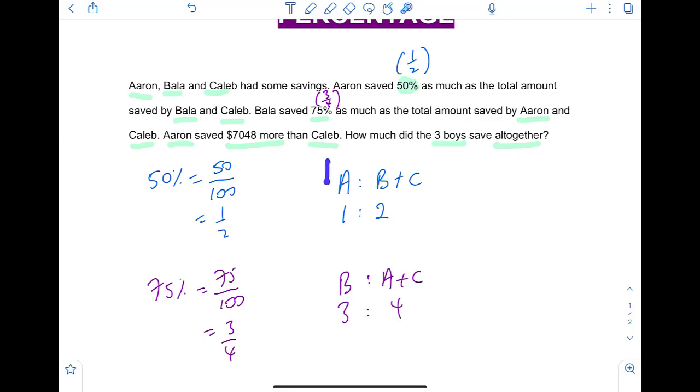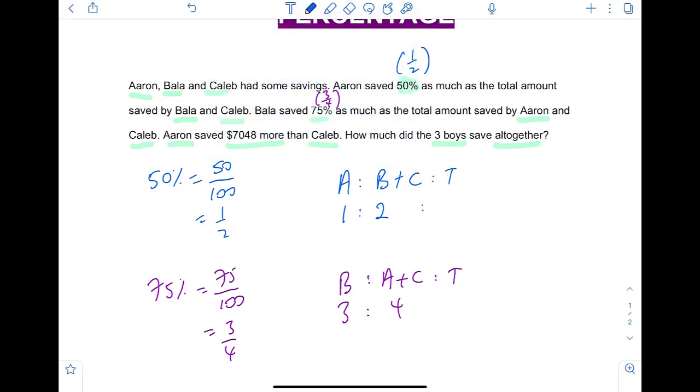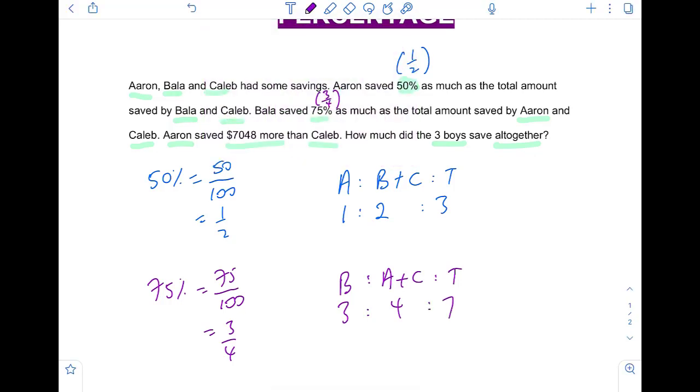And in both ratios, I want you to understand this, that the total amount saved by all these 3 people must remain the same. So, if I develop a total ratio as well, total for the top will be 3 here. And for the next ratio, it will be 7. 3 and 7 cannot be different. It must be the same. So, we make it the same. 3 and 7. Make these numbers the same.